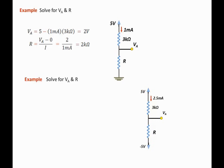So we can state that VA is equal to 5 minus 2.5 milliamps times 3k. The answer is negative 2.5 volts.